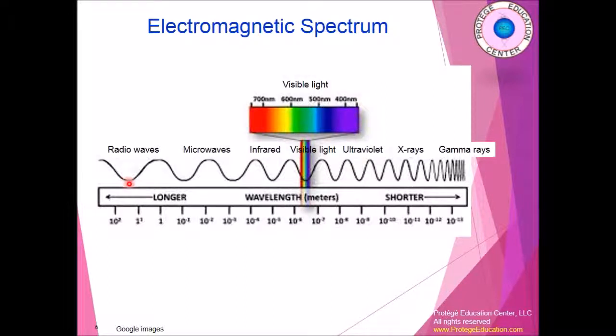What is frequency? It's the number of waves passing through one particular point in one second. For radio waves, because the wavelength is large, there will be a very low number of waves passing through that point per second — for example, two waves per second, which is called two Hertz (H-E-R-T-Z). Hertz is the unit for frequency.